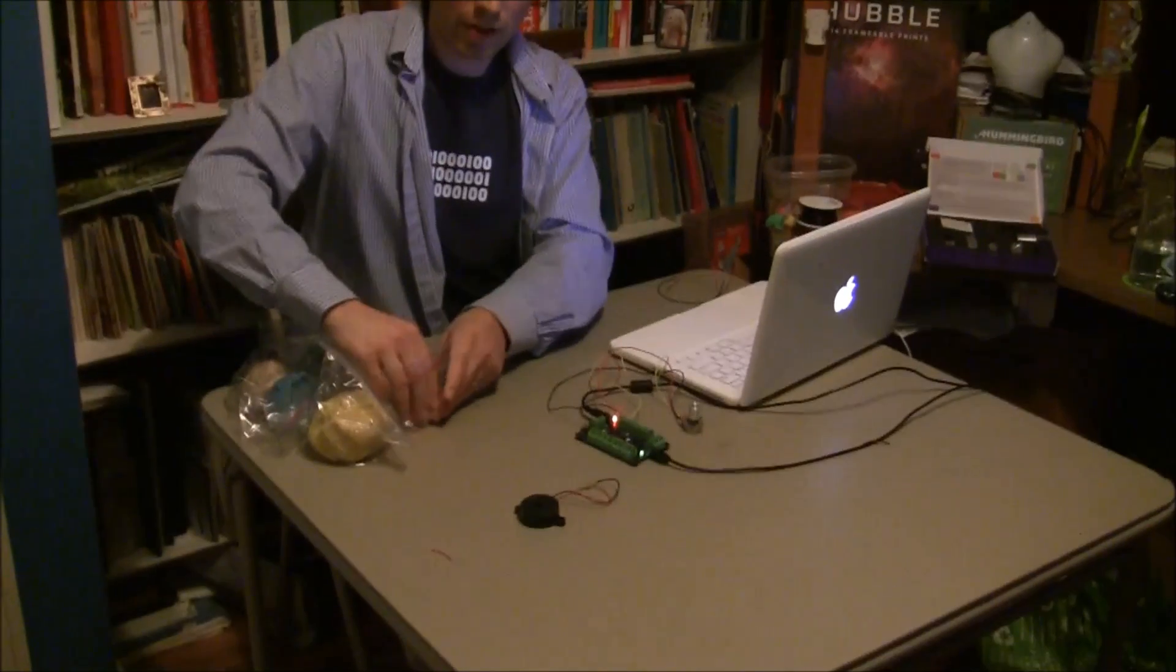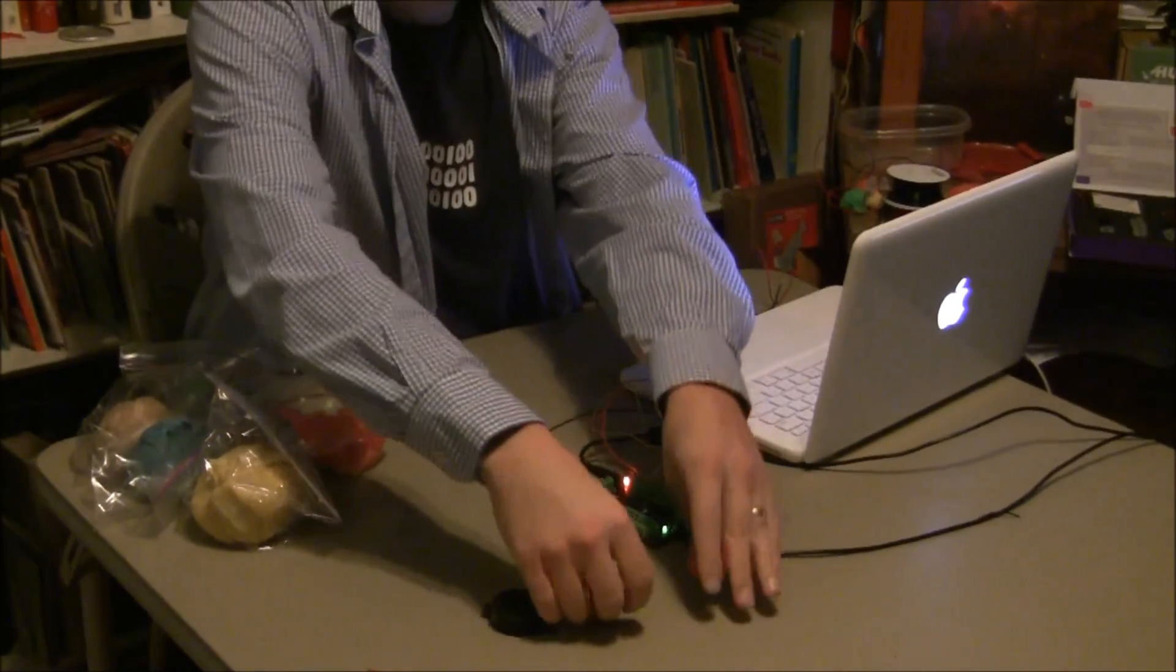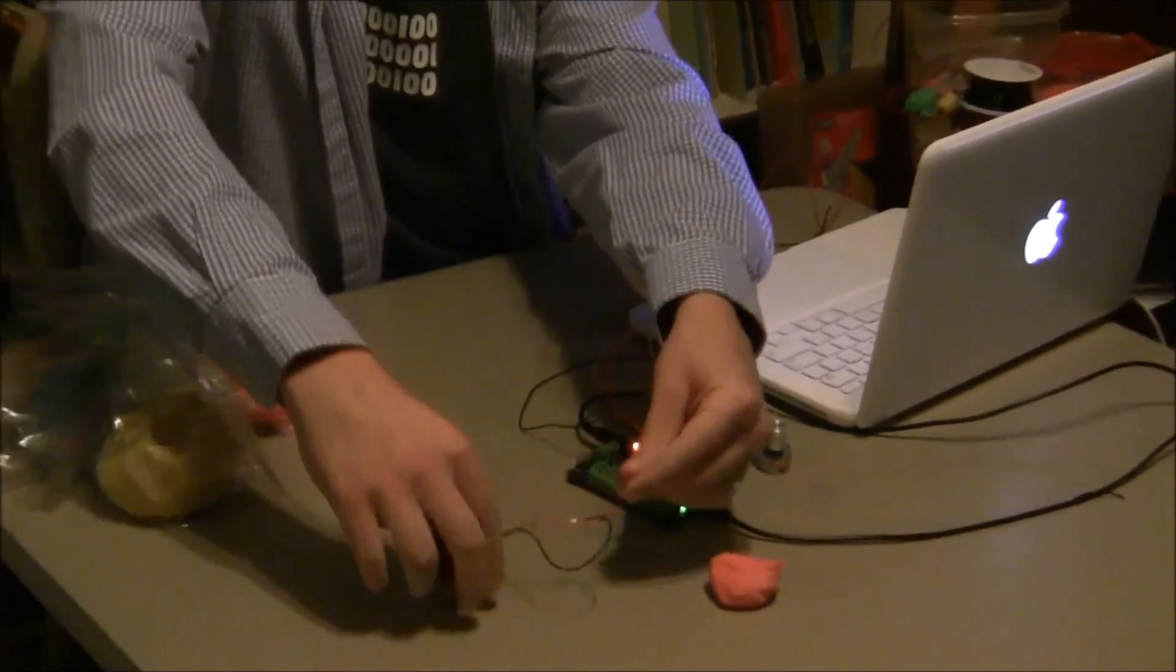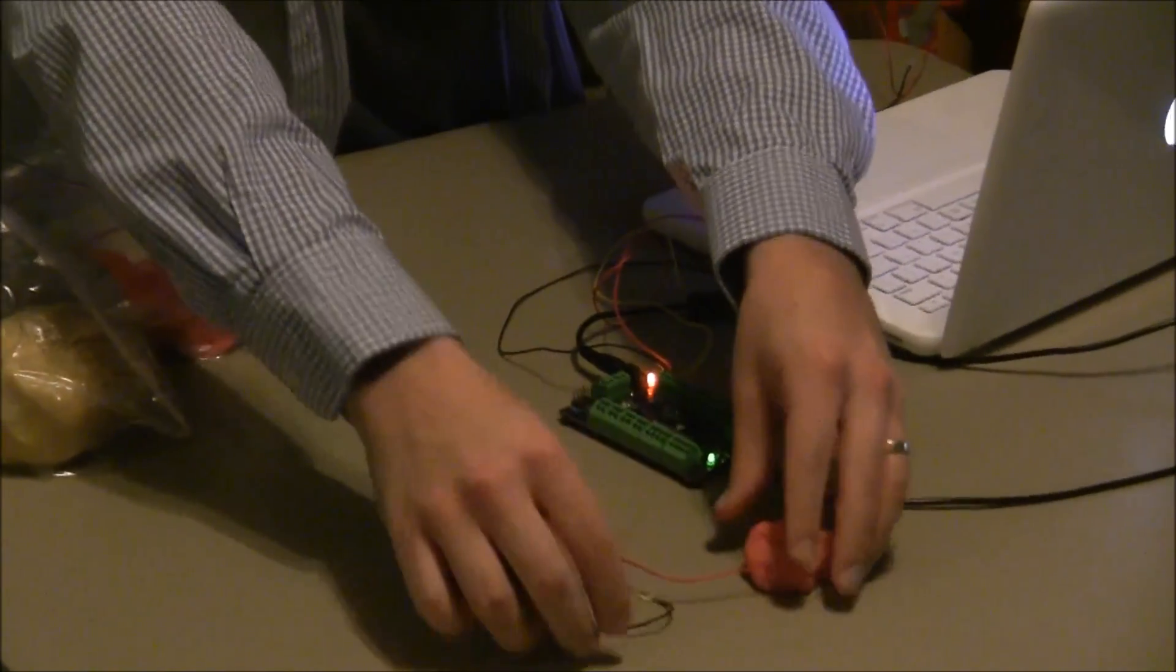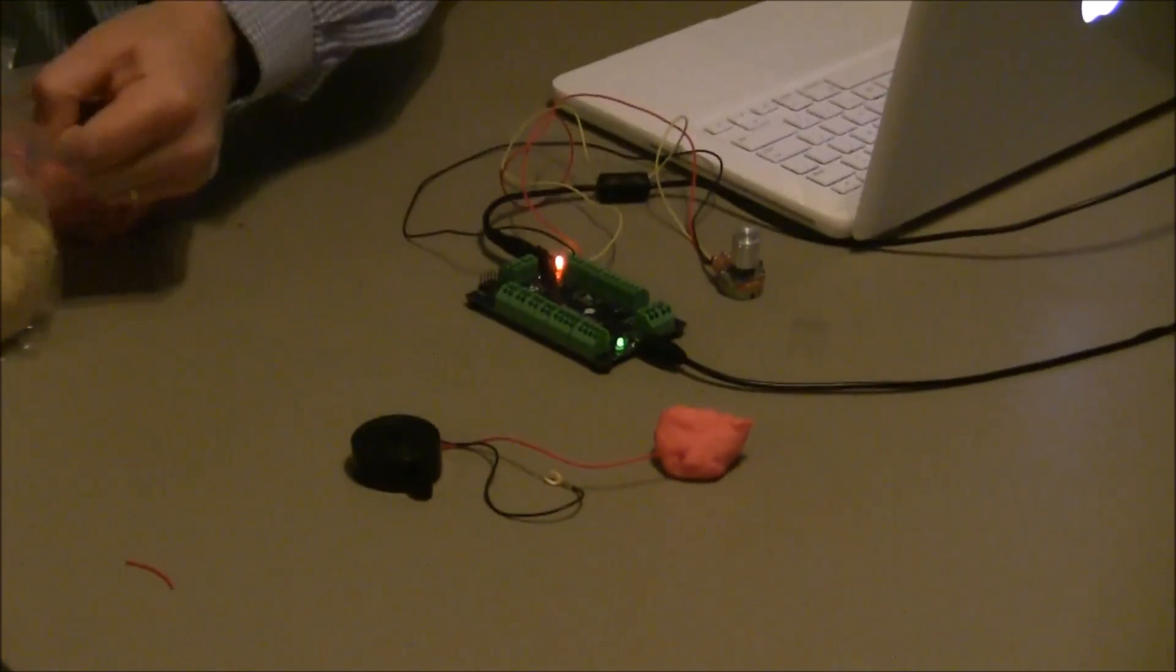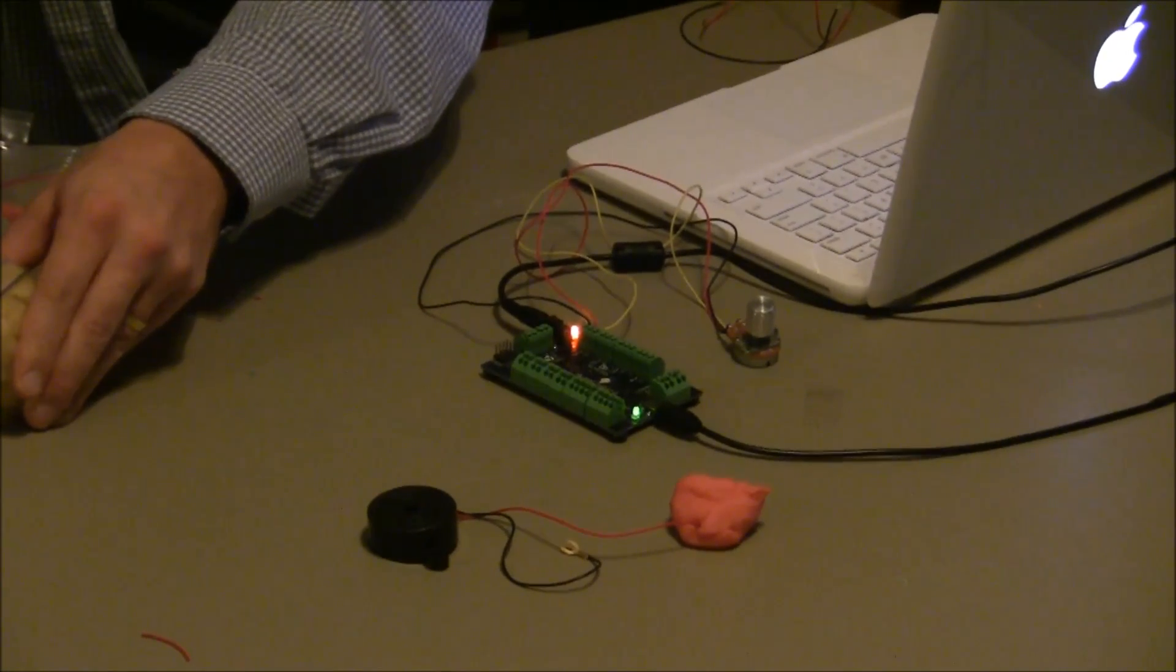So, again, we're going to take out some conductive Play-Doh. In this case, I'm going to use red. Notice that the buzzer has a red and a black wire, so I'm going to hook up the red to the red Play-Doh. And use my yellow Play-Doh again as electrical ground.